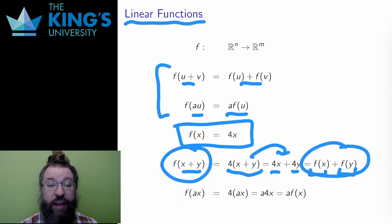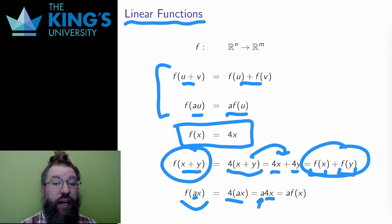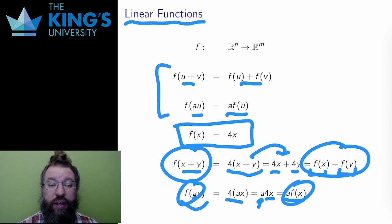Likewise, if I take another constant a and multiply x by a and then apply the function, I get 4(ax). But multiplication is commutative. These are, after all, just numbers. So this is the same as 4x times a, which is the same as a times the output f(x). I can do the same with scalar multiplication before or after. The result is the same.